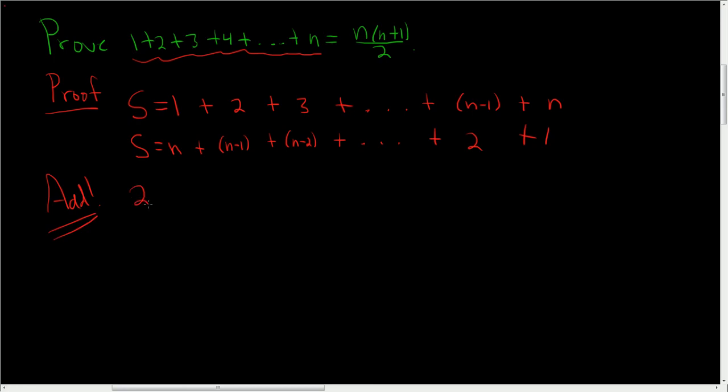Then S plus S is 2S, and we're going to add in a funny way. n plus 1 is n plus 1. n minus 1 plus 2, well, that's n plus 1. n minus 2 plus 3, well, that's n plus 1 plus dot dot dot plus n plus 1 plus n plus 1.